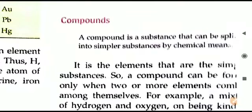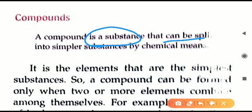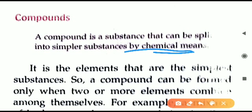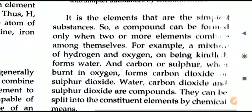Now let us begin today's topic: compounds and mixtures. First, what is a compound? A compound is any substance which can be split into simpler substances by chemical means. This is the opposite of an element — an element cannot be split, but a compound can be broken by chemical means or chemical reaction. If we do any physical process, then the compound cannot be broken.